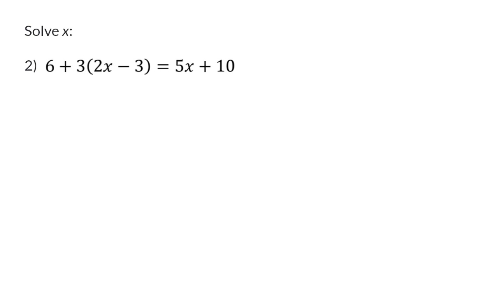In example 2, we once again have a bracket that we need to simplify before we can solve x. It is very important that you remember to always simplify each term on its own first. So in this case, I cannot add the 6 and the 3 together because the 6 is the first term and the 3 forms part of the second term with the bracket.